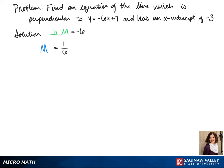Then we know that if we have an x-intercept of negative 3 that our line passes through the point negative 3, 0.